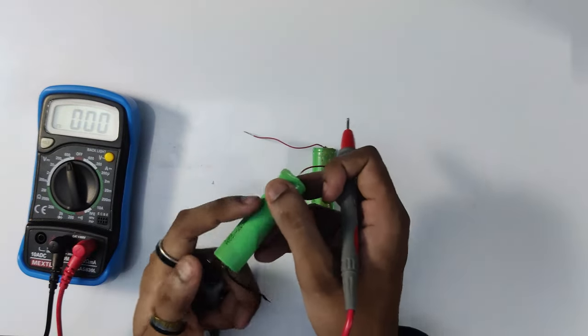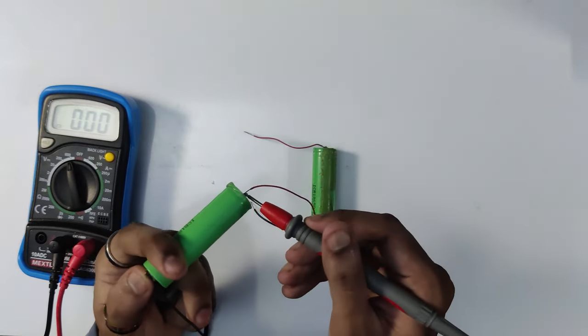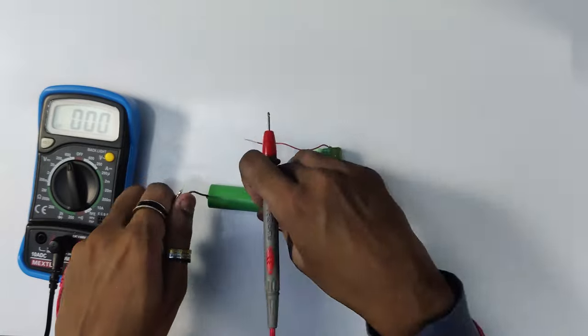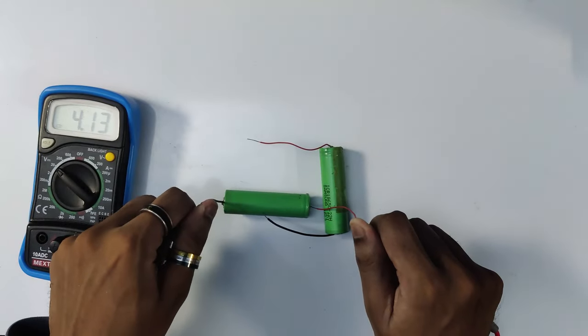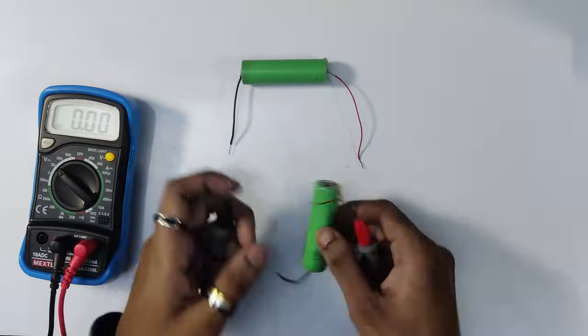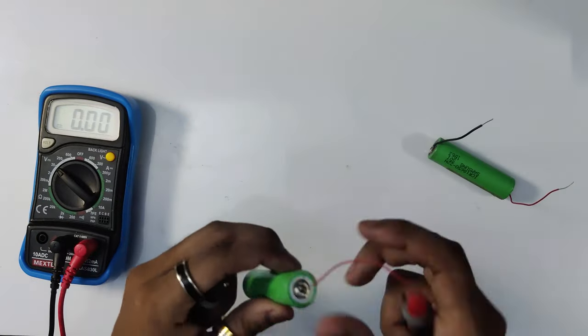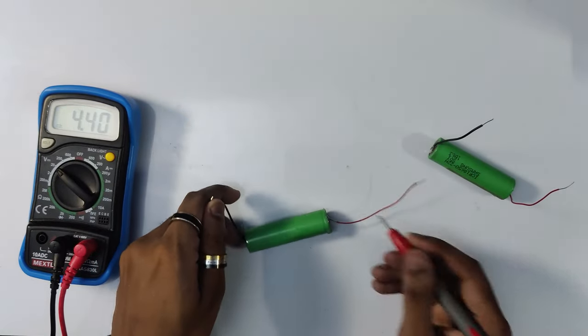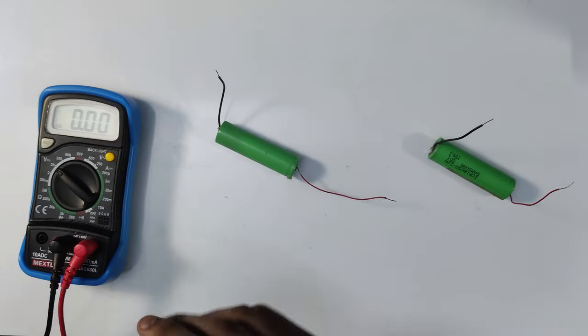Let's first check the output voltage of the battery. The battery voltage should be close to each other. They have a voltage of 4.4 and 4.3 volts.